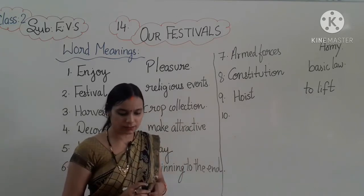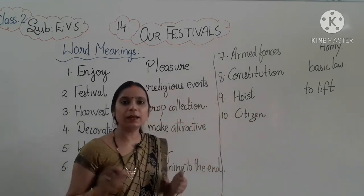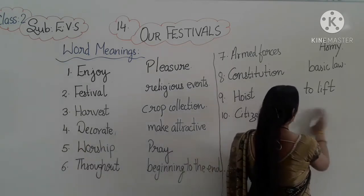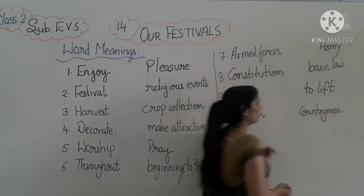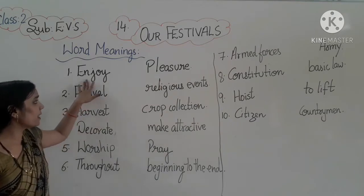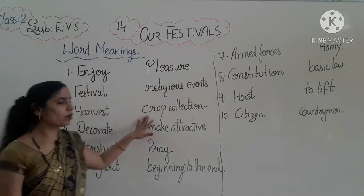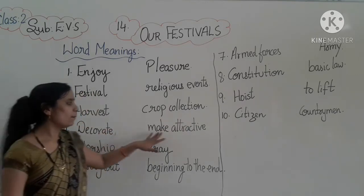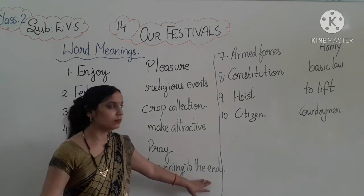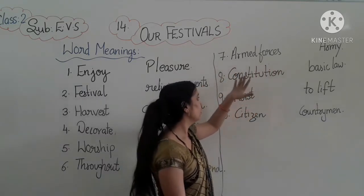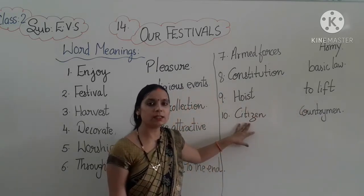Tenth word is 'citizen.' Citizen means country man — people belonging to our country. So to recap: enjoy means pleasure, festival means religious events, harvest means crop collection, decorate means make attractive, worship means pray, throughout means beginning to the end, armed forces means army, constitution means basic law, hoist means to lift, citizen means country man.